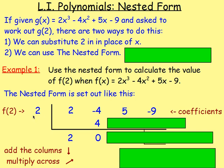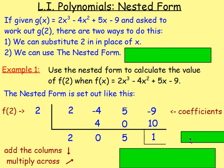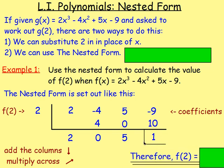And then the same thing, you multiply across. So, you're always using this 2, so now you do 2 times 0. After that, you then add the columns. 5 add 0 is still 5. And then again, multiply across. 2 times 5 gives you 10. After that, add the columns. Negative 9 add 10 gives you positive 1. And that is where you stop. What that means is that if you are asked to work out f of 2, this number on the end shows you what you would get. So, f of 2 would be 1. And that is the nested form.